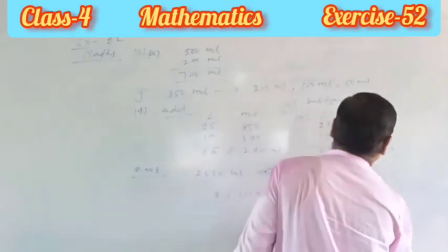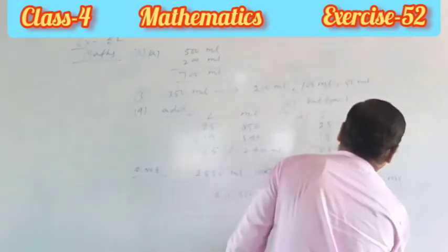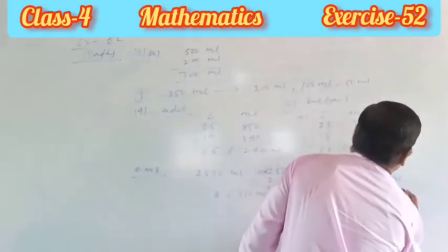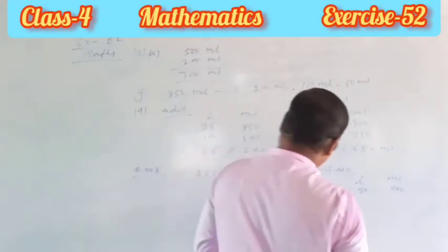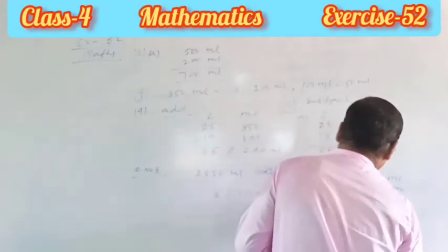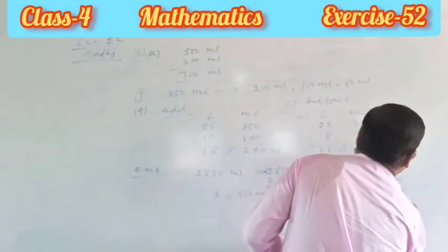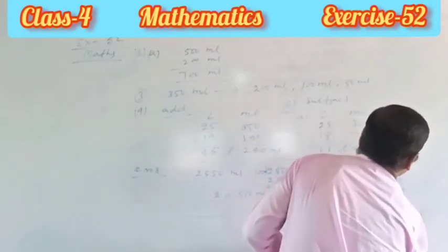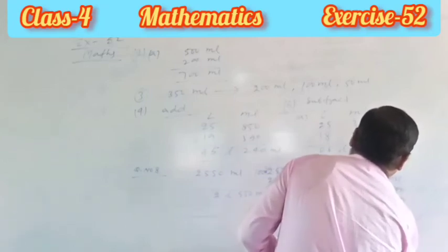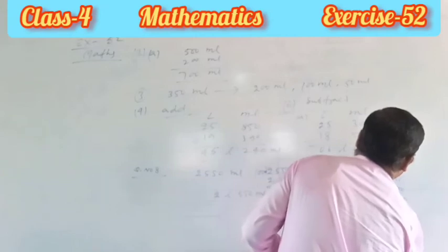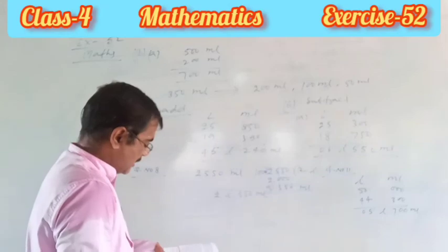First you write liter, milliliter. Then you write 50 liters and 0 ml. And you use 44 liters 300 ml. Then you subtract: 0, 7, 9, 4, 5. The answer is 5 liters 700 ml. This is your correct answer.